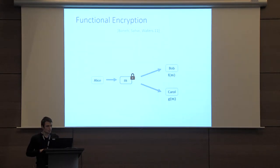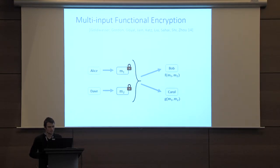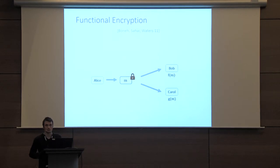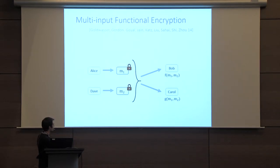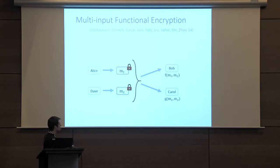Another user, Carole, should get access to a different function G applied on the data M, and nothing more. This has been generalized to the multi-input setting, where different users encrypt different messages independently for different input slots. The user can extract from these ciphertexts some partial information on the joint messages M1 and M2. So now they are binary functions, but you can generalize that for polynomially many slots.